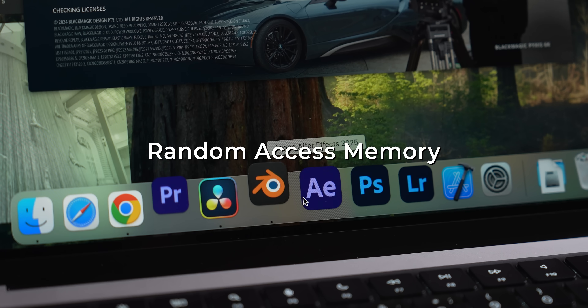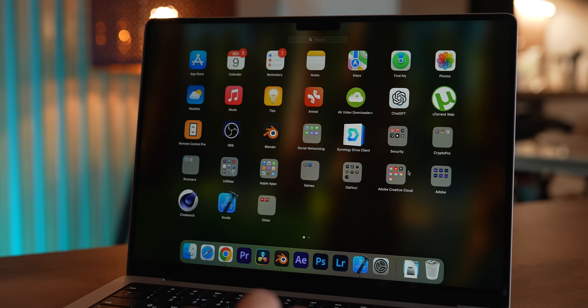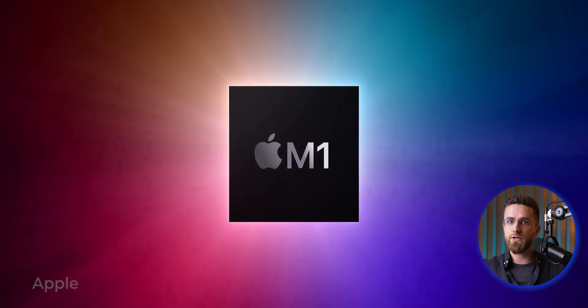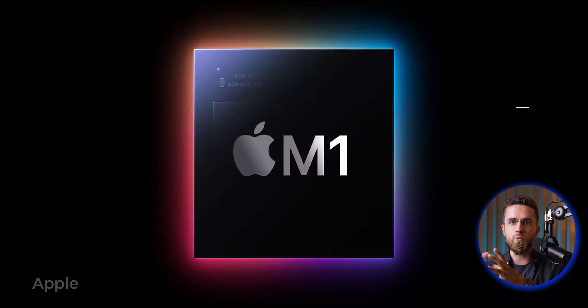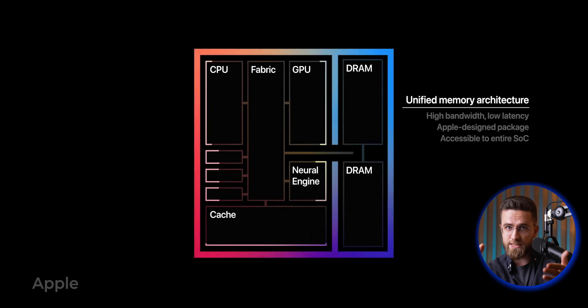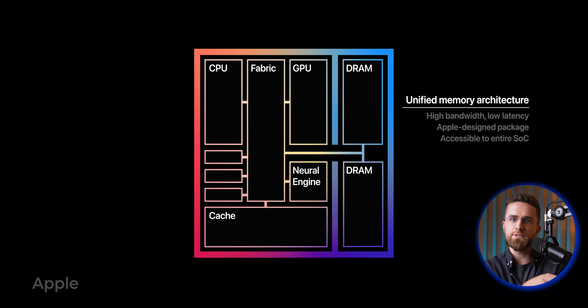To figure this out, we need to understand two things: how Mac's RAM works and what swap is. RAM, or Random Access Memory, is basically your Mac's short-term memory. But Mac's RAM isn't the same as RAM on a Windows computer. Back in 2020, Apple's shift to Apple Silicon introduced something called Unified Memory. This means one high-speed memory module handles both RAM and GPU memory — instead of separate memory pools for the system and graphics, your Mac uses one big memory pool and splits it dynamically based on what you're doing.